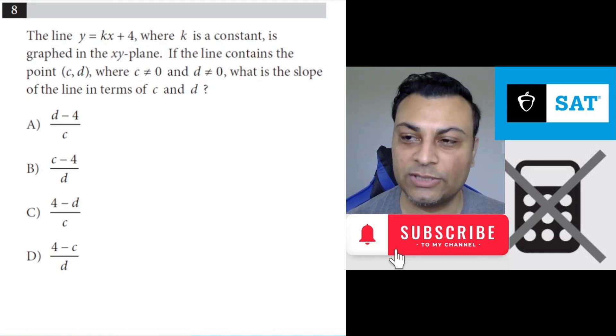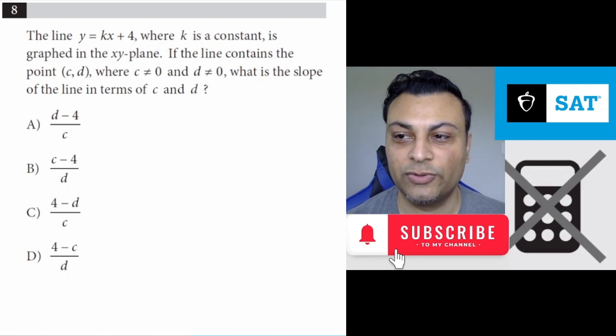Question 8 says the line y equals kx plus 4, where k is a constant, is graphed in the xy-plane. If the line contains the point (c, d), where both c and d are not 0, what is the slope of the line in terms of c and d?